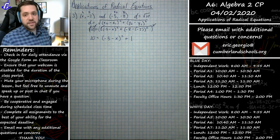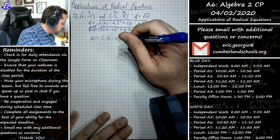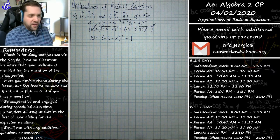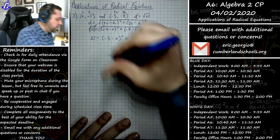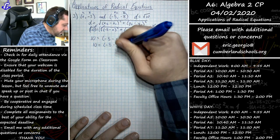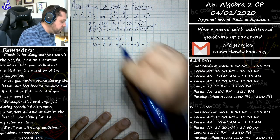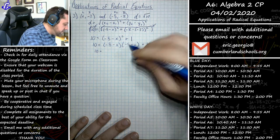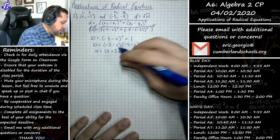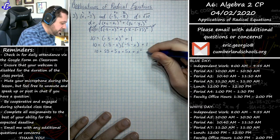Now I need to distribute. Using FOIL on (negative five minus x) times itself: negative five times negative five is positive 25, negative five times negative x is positive 5x, then another positive 5x, and negative x times negative x is positive x squared. So we get 10 equals x squared plus 10x plus 25 plus 1.